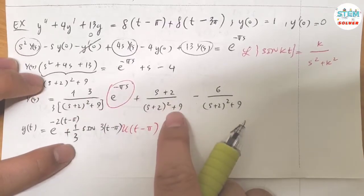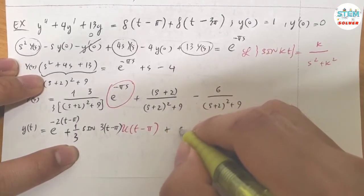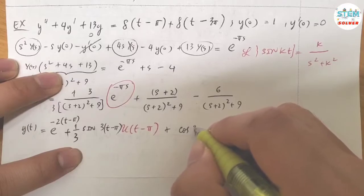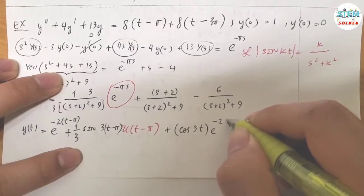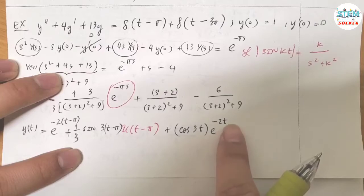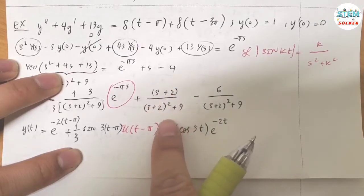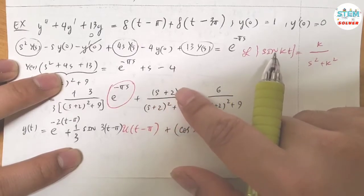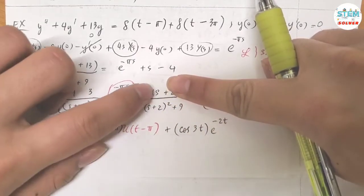That is for the first one. Second one. This becomes cosine of 3T times e to the negative 2T, right? Because you have the shift here, it's going to give you e to the negative 2T. And without the shift, you have S over S squared plus 9. That is cosine of 3T. The reason I need to have S plus 2 on top is to match up with what I have on the bottom. Without it, you cannot find the inverse transform of this one.